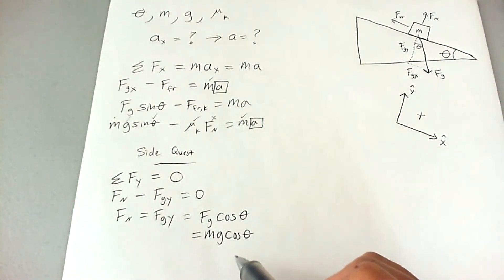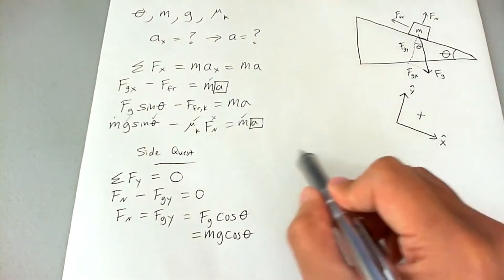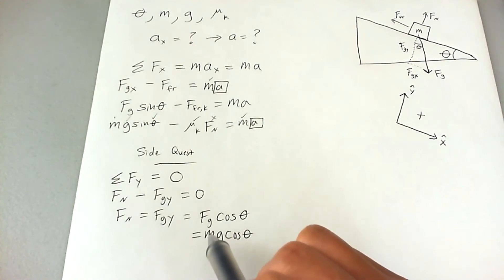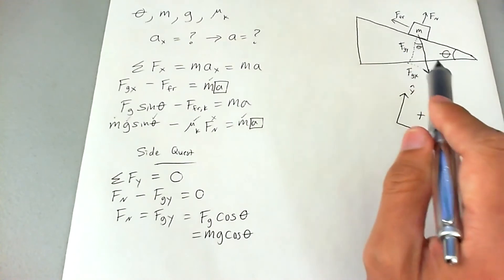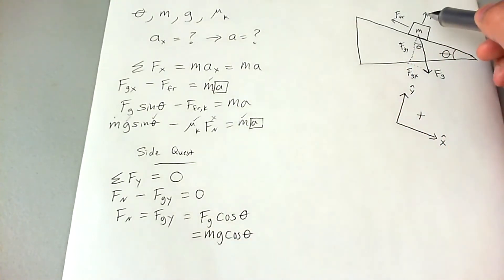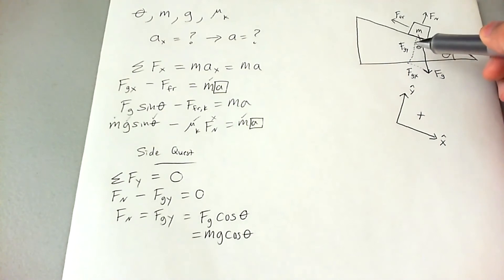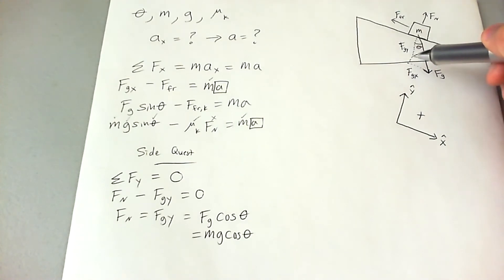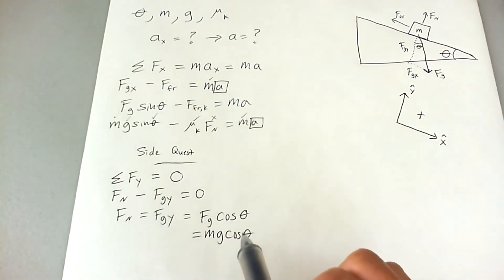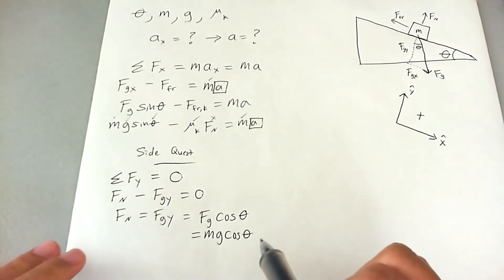Notice that for most problems — where a block is on level ground — normal force simply equals MG, and that holds for about 90% of physics problems on Earth's surface. But for this ramp, where the block is on unleveled ground, normal force equals FG in the y direction, which is MG cosine theta. The key point: if a block isn't moving up or down, the normal force directly equals the opposing vector. Don't always assume normal force is MG — on unleveled ground it can be MG cosine theta or even MG sine theta in some cases.